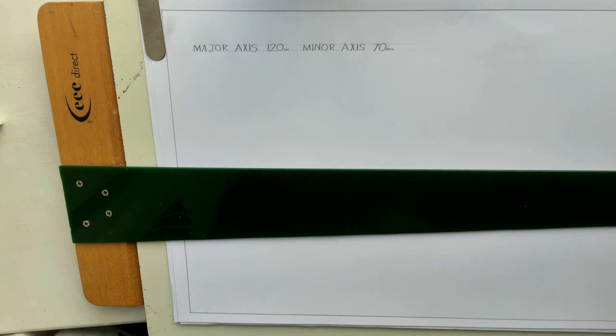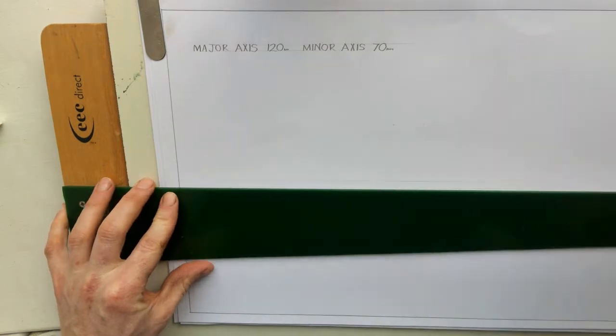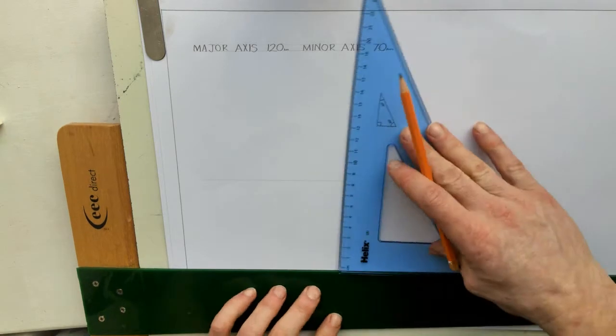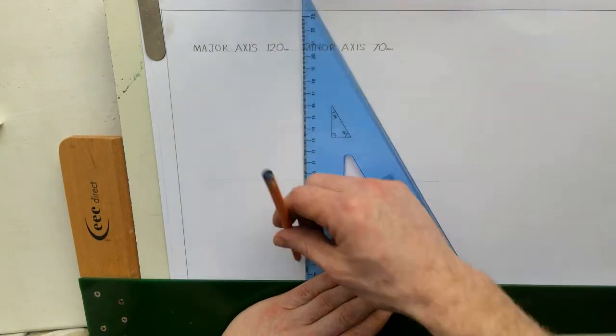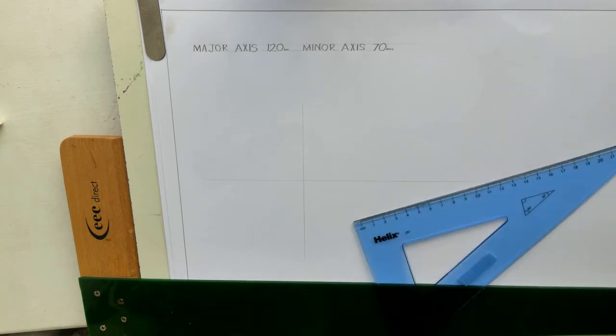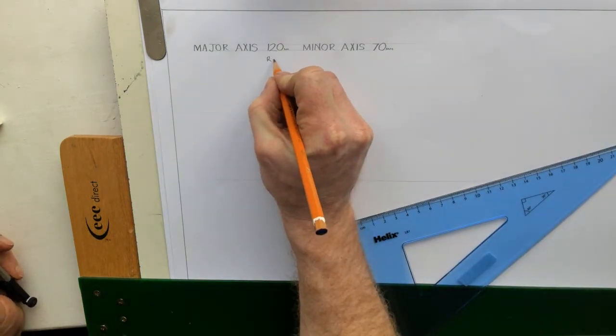So for this, what we do is draw a line in the middle of the page. The major axis is going horizontal here. So this is going to be 120. So we've got two lines here. If the major axis is 120, we're going to set our compass to half that radius of 60.